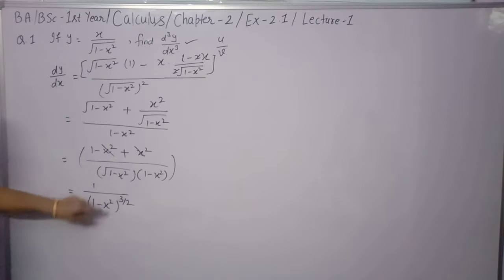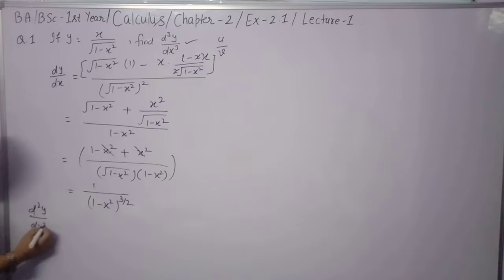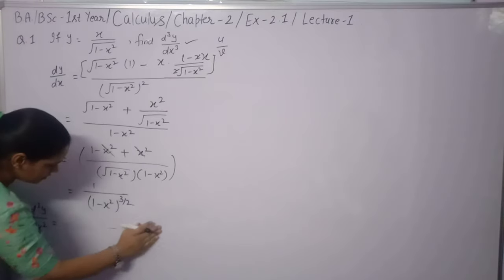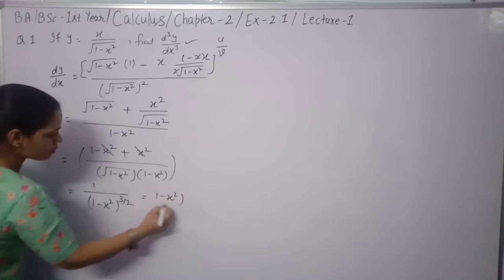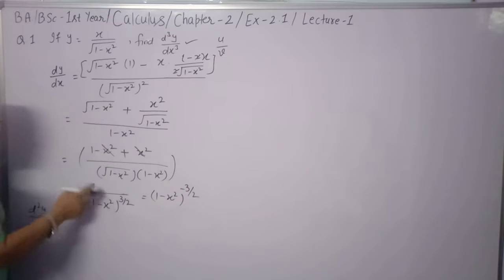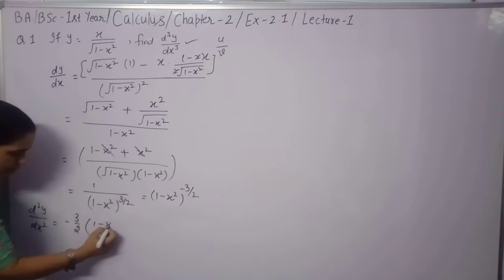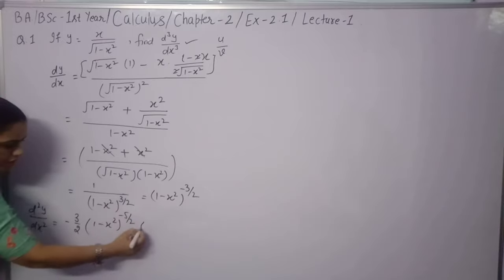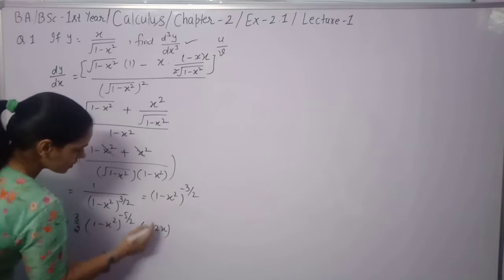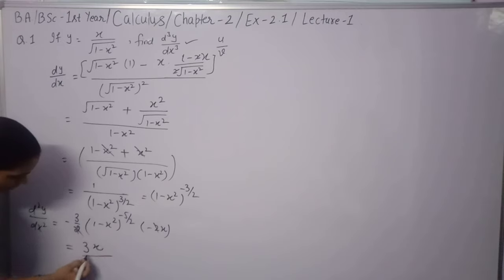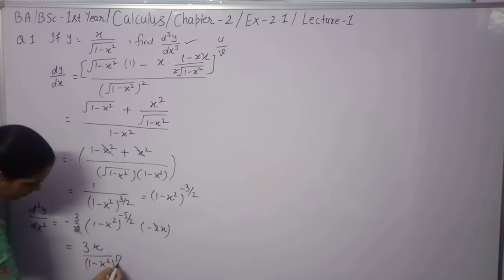Now the second derivative d²y/dx² — we write (1-x²)^(-3/2). Using the power rule: bring down the power -3/2, then (1-x²)^(-5/2), and multiply by the derivative of the base which is -2x. The 2's cancel and minus × minus gives plus, resulting in 3x divided by (1-x²)^(5/2).